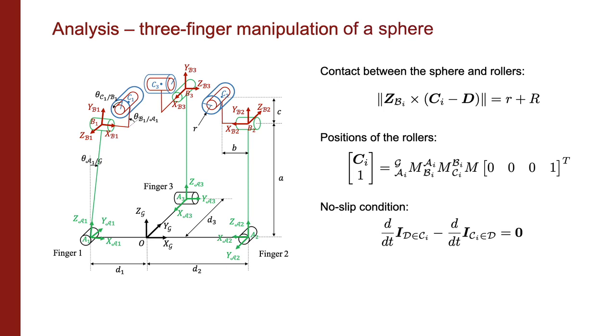Here is a summary of the frames, points, and kinematic variables we defined to conduct our 3D analysis. For this analysis, we consider a manipulation of a sphere of center D and radius capitalized R, which yields a closed and solvable system given by contact between the sphere and the rollers, position of the rollers which can be computed by forward kinematics and homogeneous transformation matrices, and no slip condition between each roller and the sphere.